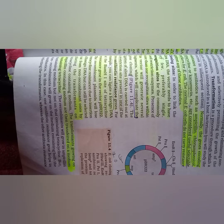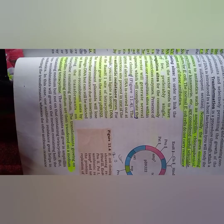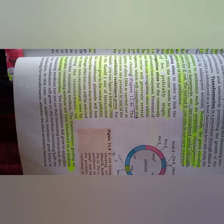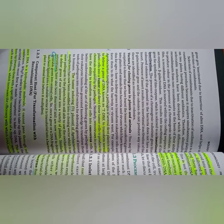Non-transformants grow on ampicillin-containing medium and are then transferred onto medium containing tetracycline. Recombinants will grow in ampicillin but not on tetracycline-containing medium. Non-recombinants will grow on medium containing both antibiotics. One antibiotic resistance gene helps in selecting the transformants, while the other antibiotic resistance gene gets inactivated due to insertion of alien DNA, helping in the selection of recombinants.